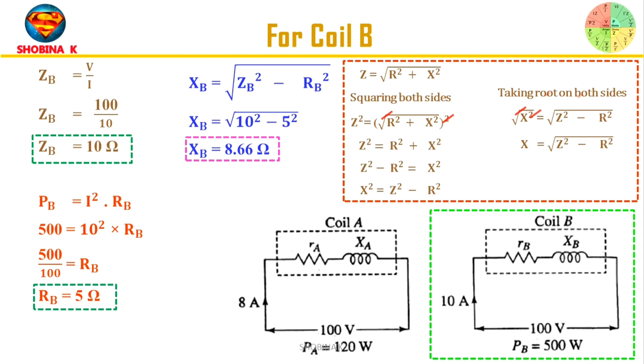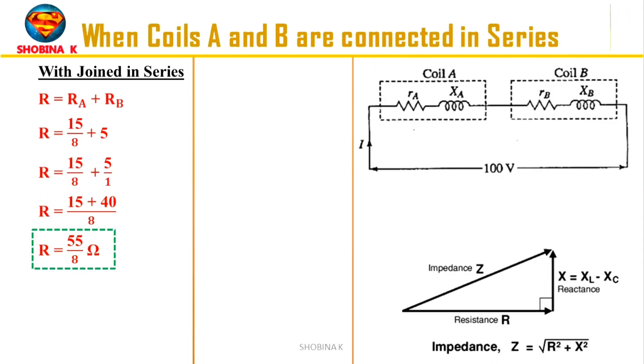Now let's see when coil A and B are connected in series. When it is joined in series, to calculate the total resistance, add the two individual resistances connected in series. Now add the reactance of coil A and coil B to obtain the total reactance.